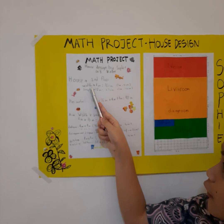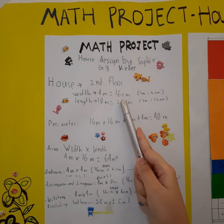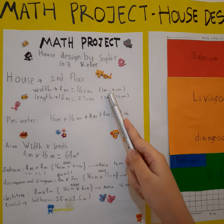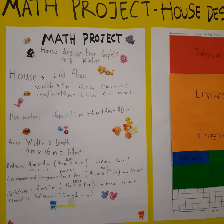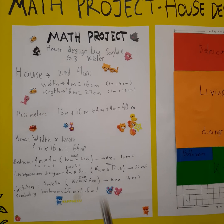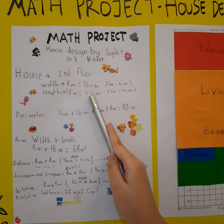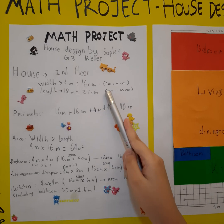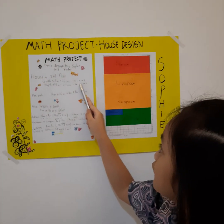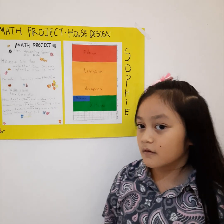The width of my second floor is 4 meters, which equals to 16 centimeters, which we resize it to 1 meter equals 4 centimeters. The length of the second floor is 18 meters, which equals to 27 centimeters, which we resize it into 1 meter equals to 1.5 centimeters.